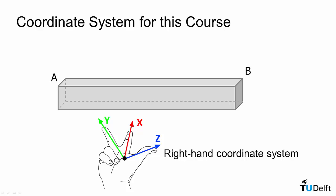It will be a right-handed coordinate system with y defined as positive downwards. z will be positive in the length direction of the beam and because of a right-handed coordinate system, that results in x being positive coming in and out of the screen.